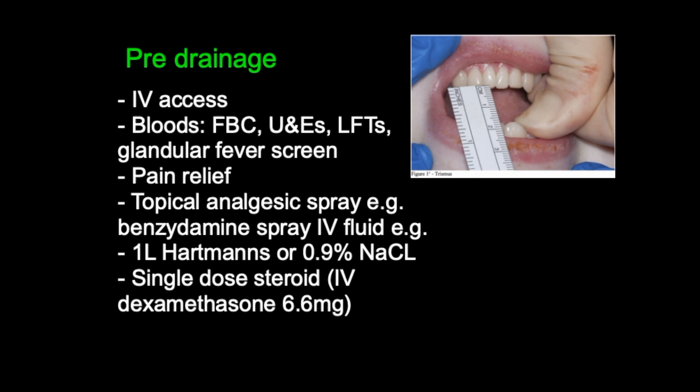In this video I'm assuming some prior background knowledge — that you've taken a detailed history from the patient, thoroughly examined the patient, and that you've got a high clinical suspicion of a Quincy. It might initially be difficult to examine the mouth if there's significant trismus, which is the medical word for someone who is unable to open their mouth fully. In this case you want to admit the patient, give them some IV treatment, and re-examine them later, as the initial treatment can improve your view.